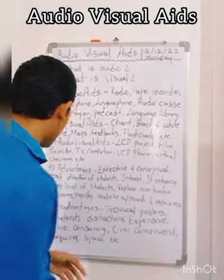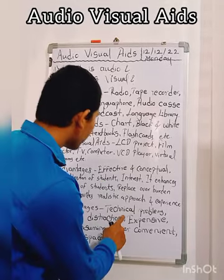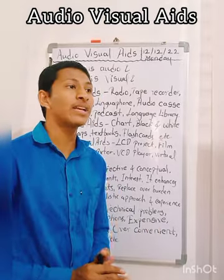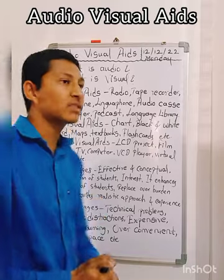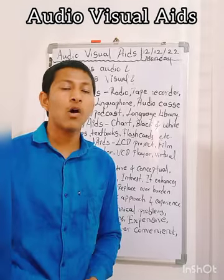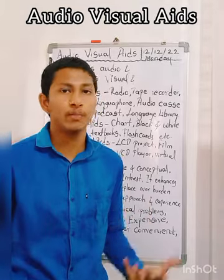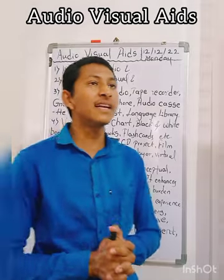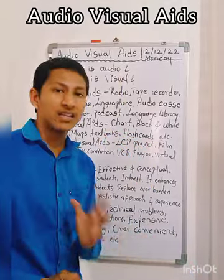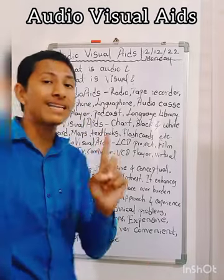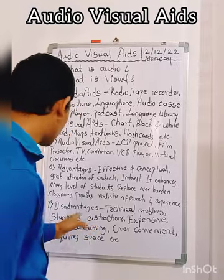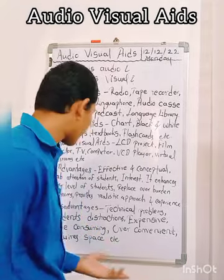Disadvantages are also there. Technical problems occur — for example, network issues are a type of technical problem. Student distraction is another disadvantage — audio-visual aids can lead to distraction among pupils, learners, and aspirants, making students addicted to them. Like the two sides of a coin, the disadvantages include technical problems, network issues, and student distraction.